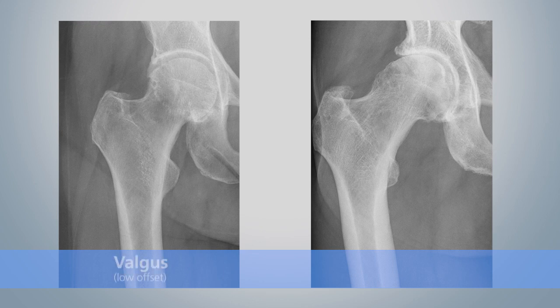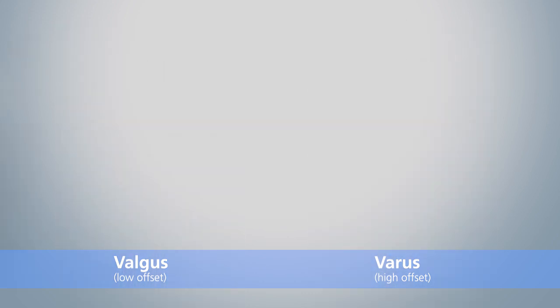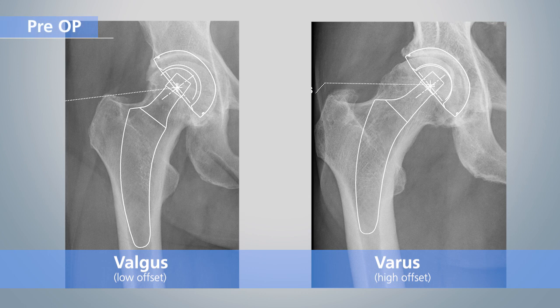The following two radiographs show a valgus hip with small femoral offset and short femoral neck, and a varus hip with correspondingly large offset and longer femoral neck. According to the standard of modern hip endoprosthetic surgery, preoperative planning is mandatory. Particular attention should be paid to the level of the osteotomy, the height of the prosthesis shoulder, and the contact of the lateral prosthesis tip with the lateral cortex.